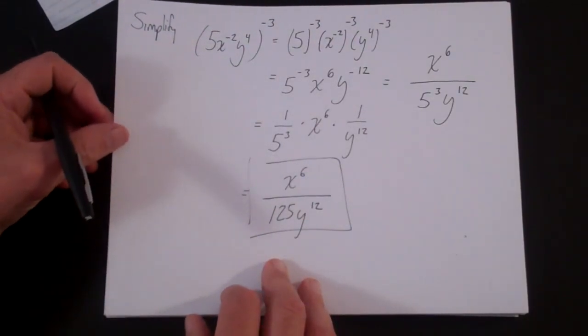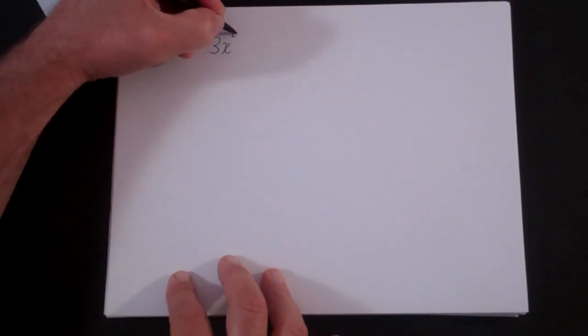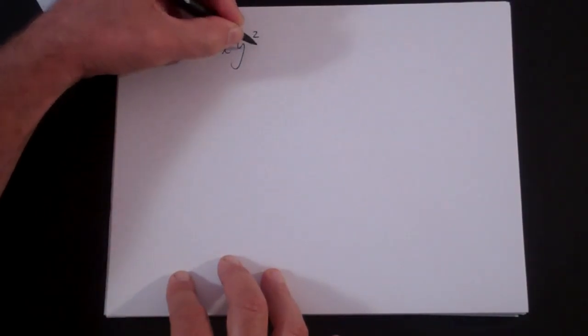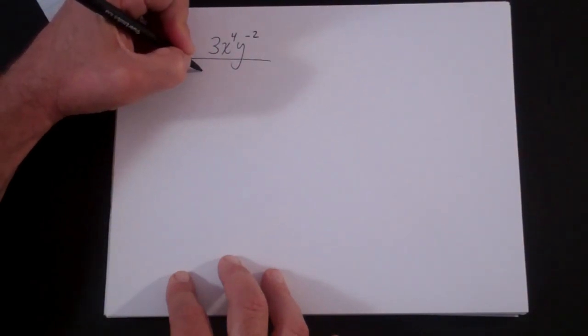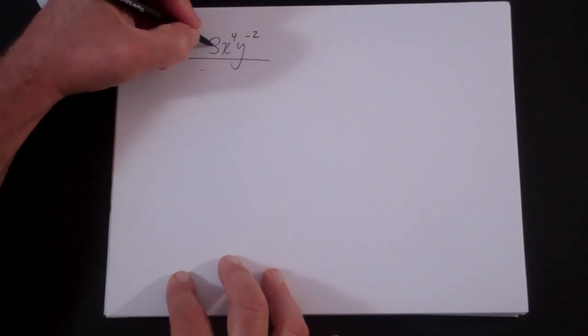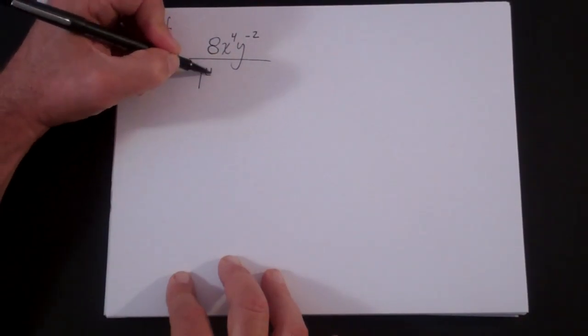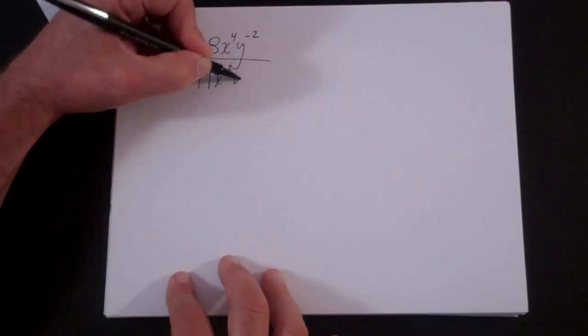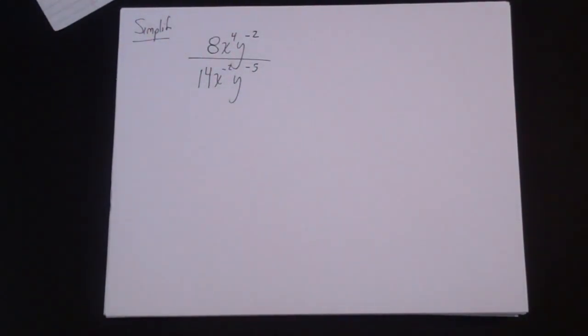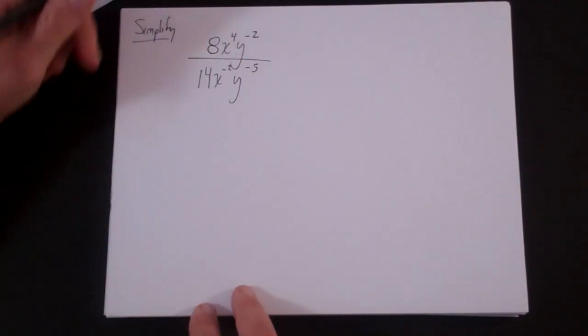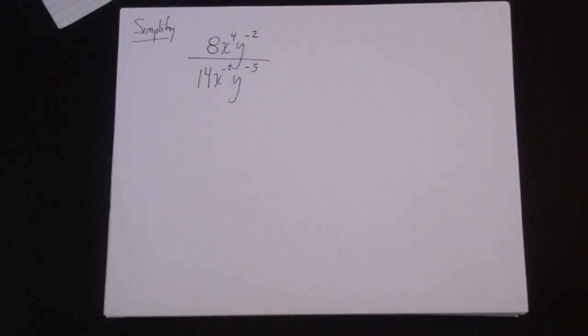That was kind of a warm-up. Now we're going to look at some more complicated examples. This one is 8x to the fourth y to the minus 2 over 14x to the minus 2 y to the minus 5. There are a couple of different ways to solve this problem, but I always solve it the same way.